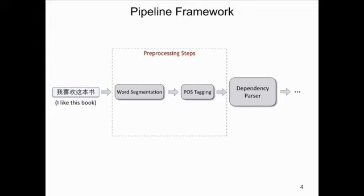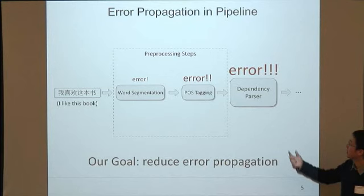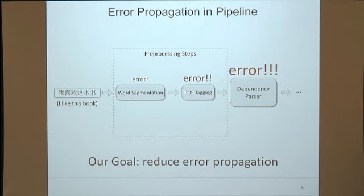So how do they obtain part-of-speech tags for the input sentence? A simple solution is the pipeline method: they first train an independent POS tagger, and then use it to predict tags for the sentence as a preprocessing step. Moreover, if we want to parse a Chinese sentence, we first need to do word segmentation as another preprocessing step, because Chinese doesn't naturally have word boundaries. An important issue with this pipeline framework is error propagation — errors in word segmentation cause more errors in part-of-speech tagging, and even more errors in dependency parsing.